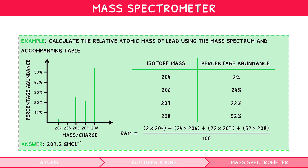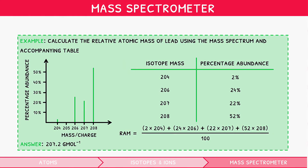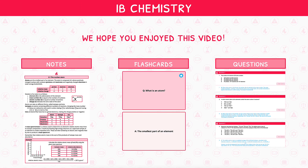Mass spectrometry will be explored in greater depth in Topic 11 of the IB Chemistry Syllabus during spectroscopic identification of compounds, especially for the higher-level syllabus. We hope you enjoyed the first video in our IB Chemistry Topic 2 video series. Check out our notes, flashcards and questions on our website to reinforce your understanding from this video.